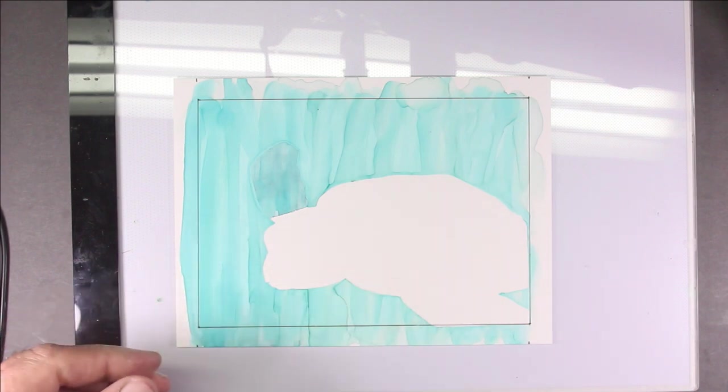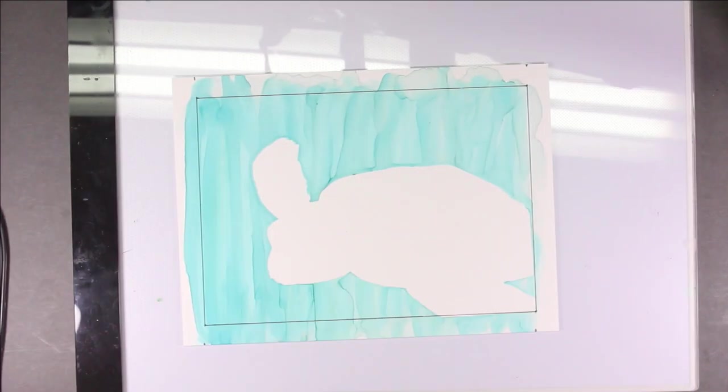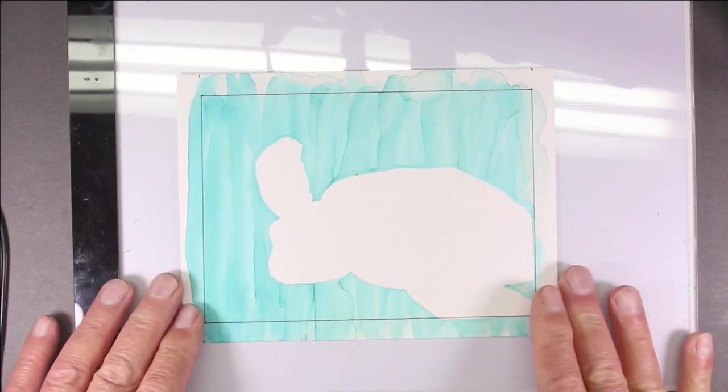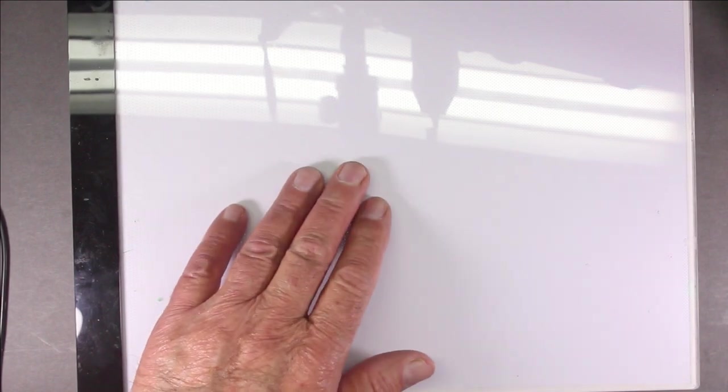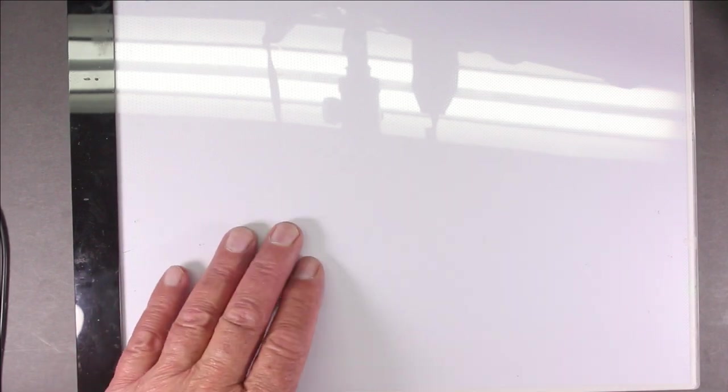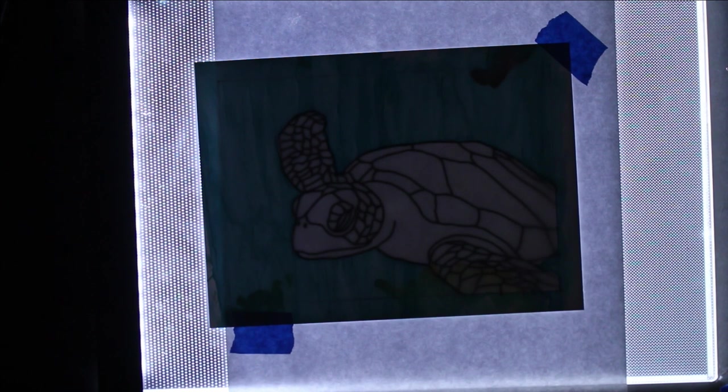I'm going to be tracing my drawing onto the Yupo paper and I will be using this tracing light board. I believe I bought this one at Walmart for $21 but you can find them on the internet from between $15 and $20. I'll have to turn my lights off so I can see when I'm tracing. I will be using an ultra fine point Sharpie pen to do the tracing.